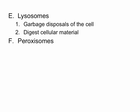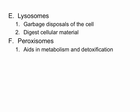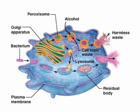A peroxisome is another organelle. It aids in metabolism and detoxification — so your liver, for example, would have many peroxisomes in it. It also helps break down hydrogen peroxide, which is fairly toxic inside the body. When your body produces hydrogen peroxide, the peroxisomes break it down almost immediately so you don't poison yourself. If you drink some alcohol or have toxic waste from another cell, the peroxisome helps break that down into harmless waste and exocytoses it out of the cell.